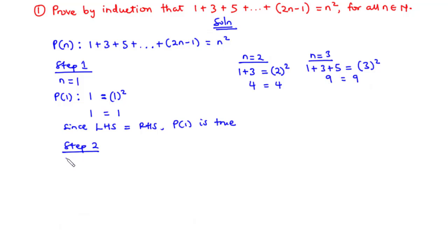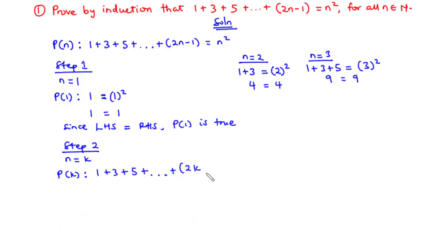For step 2, we assume the statement is true for n equals k. So for p(k), plugging k in place of n, we have: 1 + 3 + 5 + … + (2k − 1) = k². This is the assumption we are making. For step 3, based on that assumption, we are going to prove the statement is true for n equals k + 1.